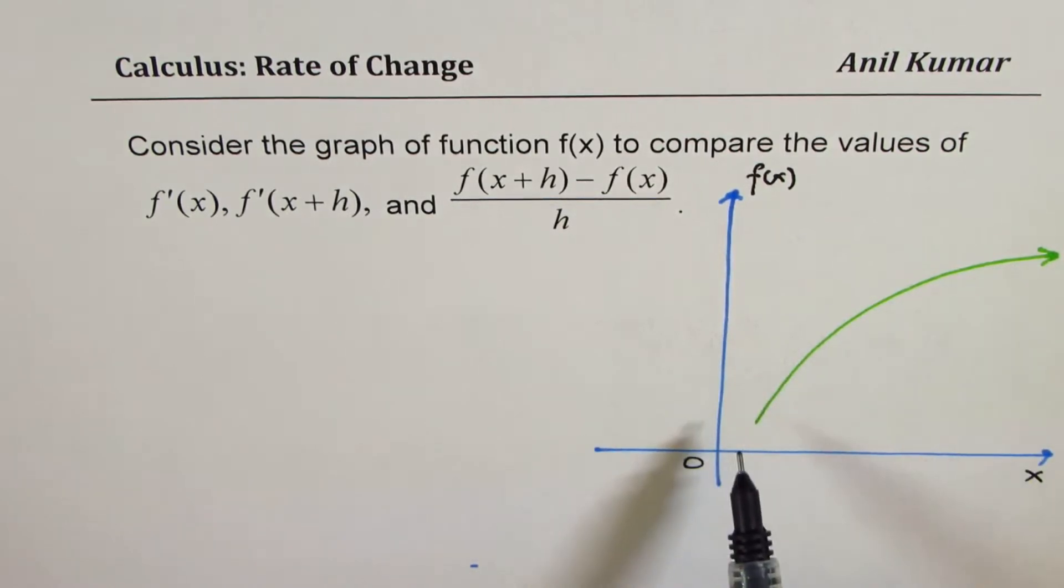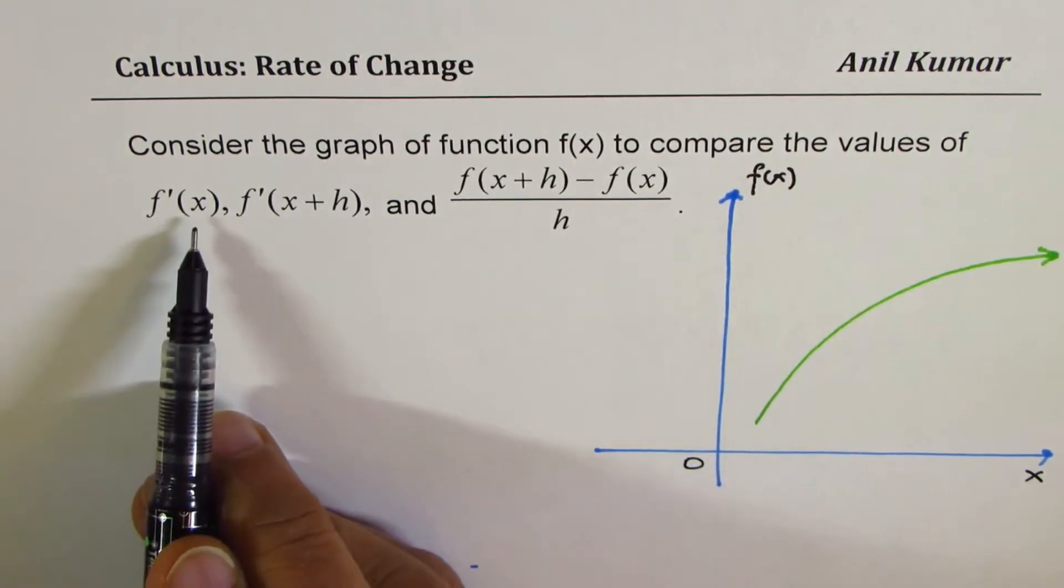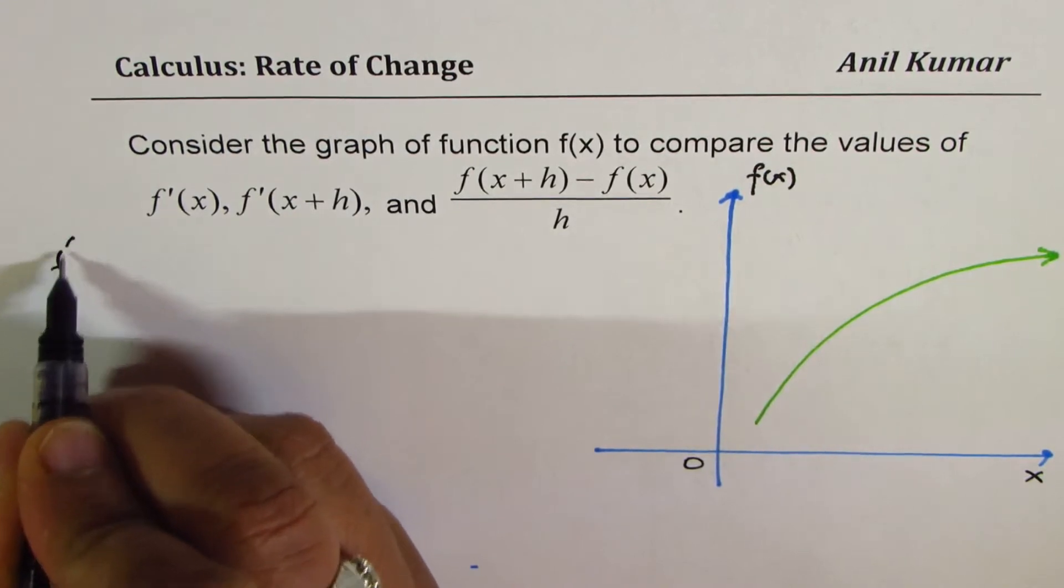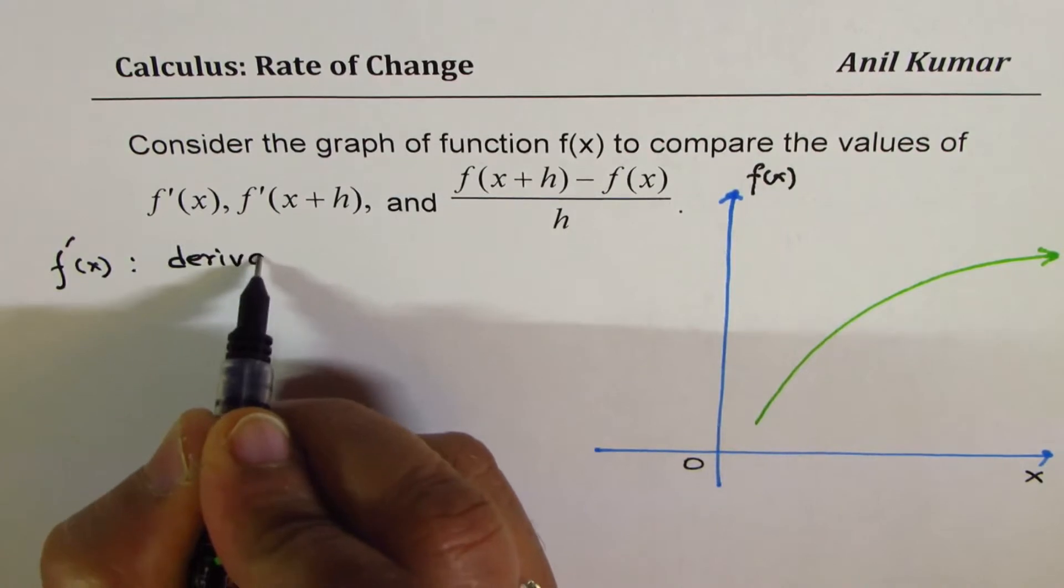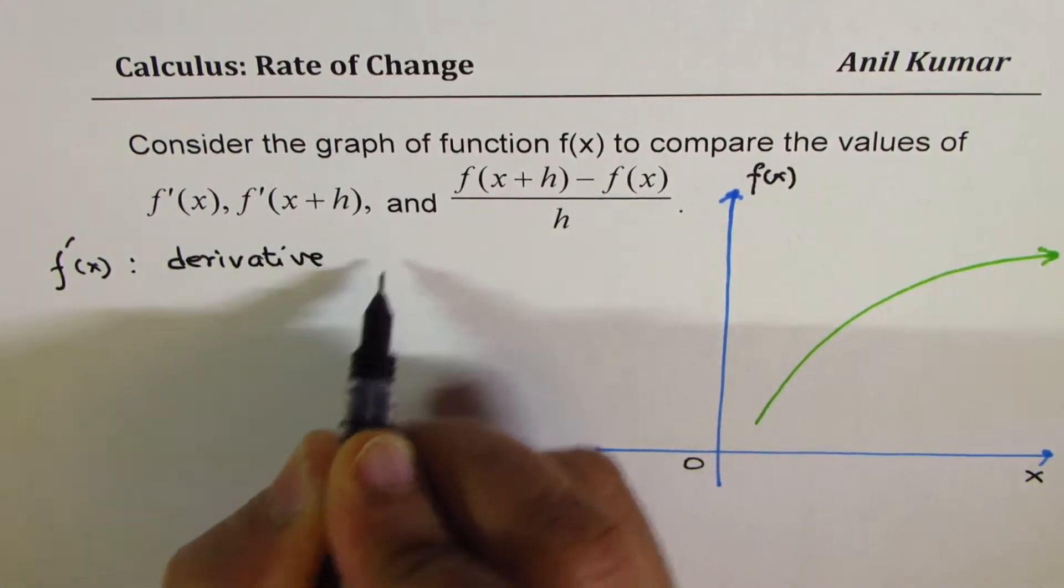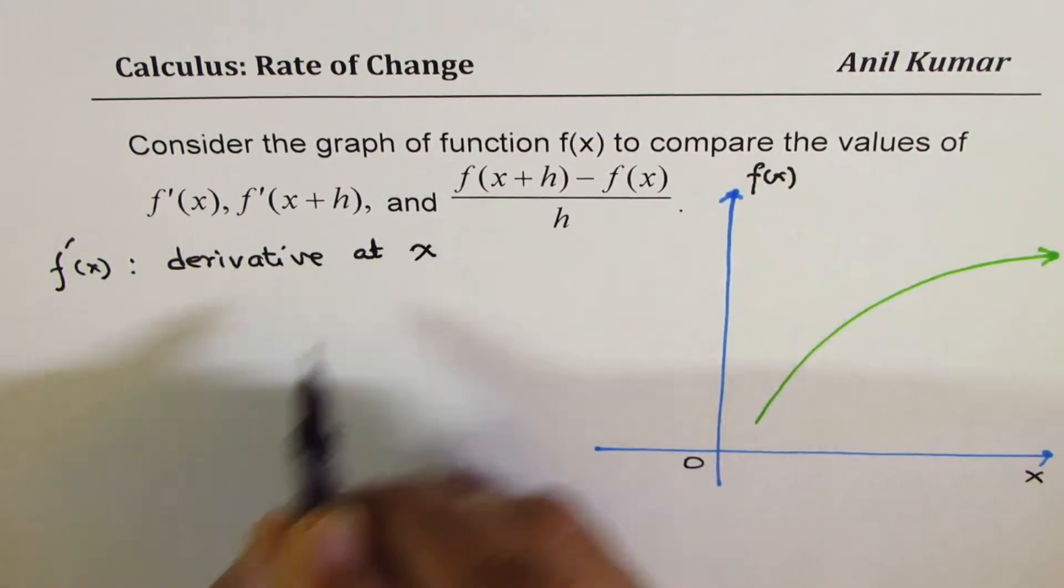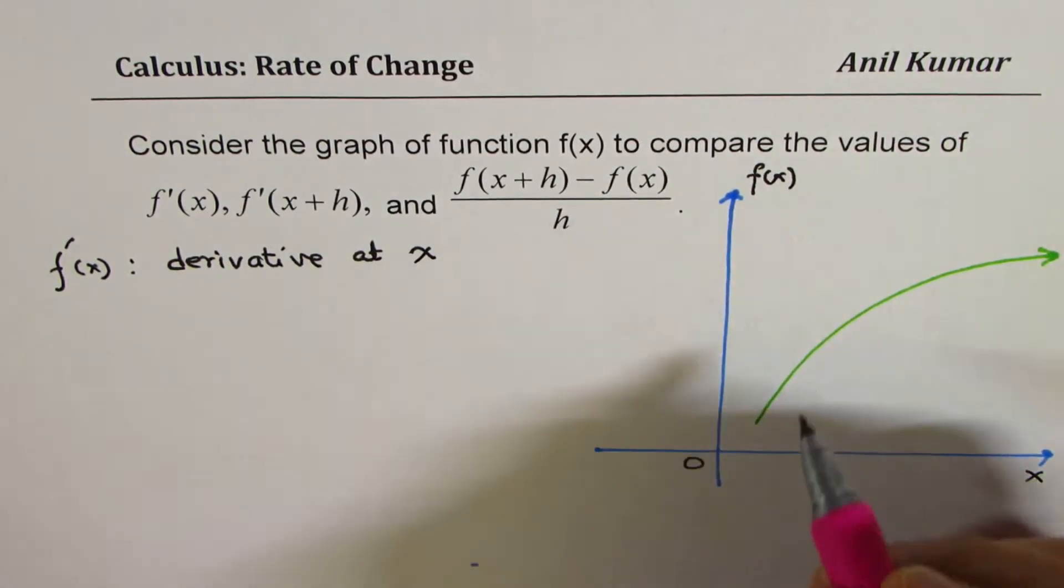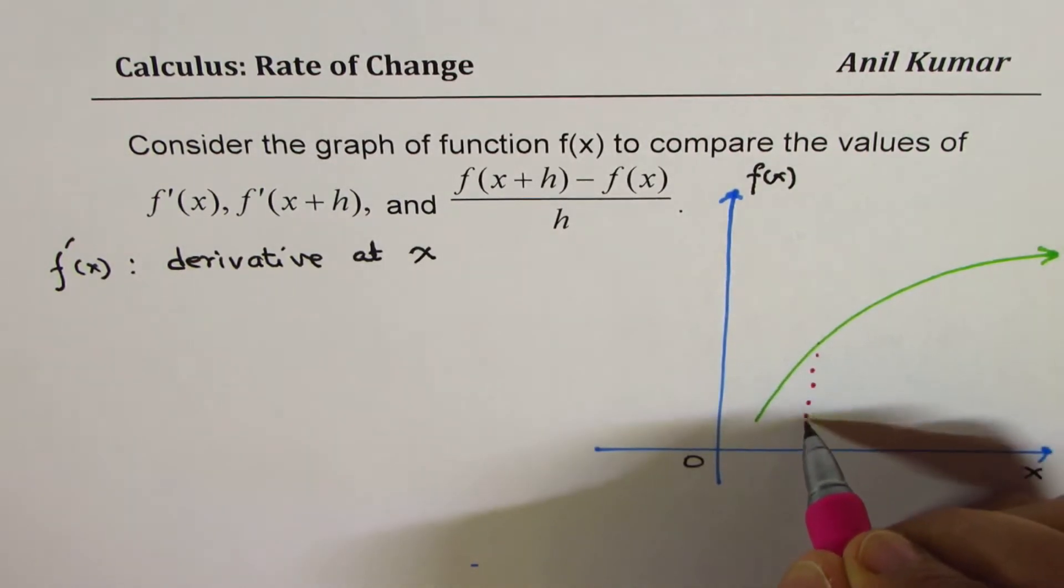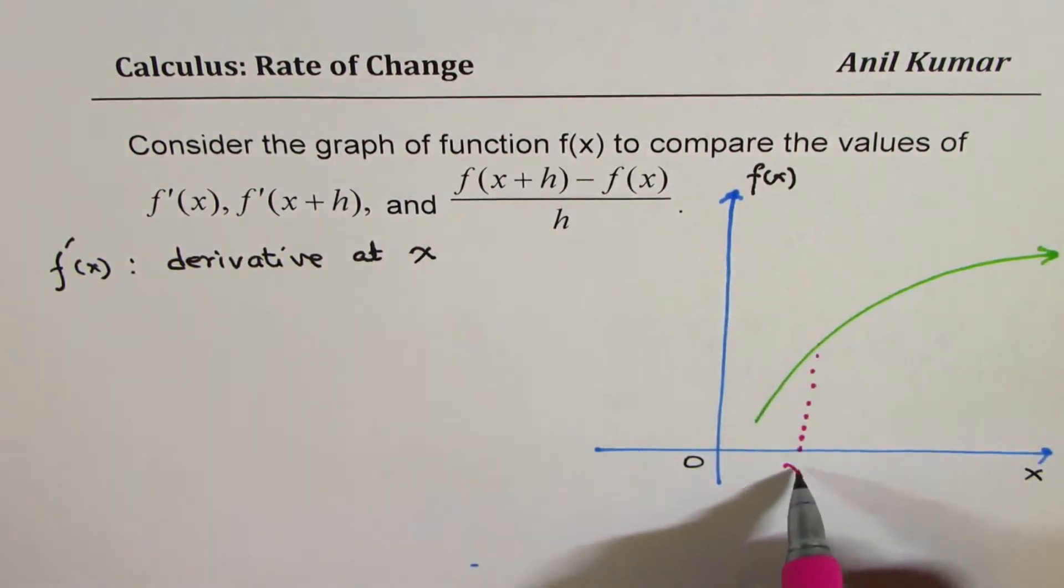So here is the graph of the function shown in green. We need to compare the values for the first derivative at x. When we say f'(x), it means derivative at x. So let's take a point x somewhere. Let us say the point for us is somewhere here. Let's call this point as some value x in general.